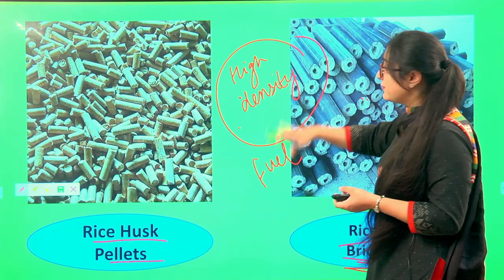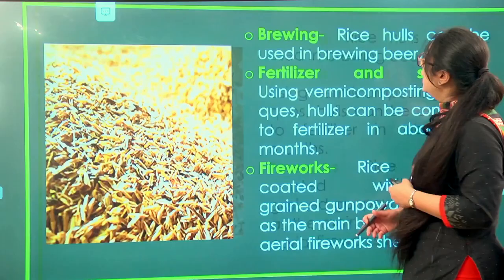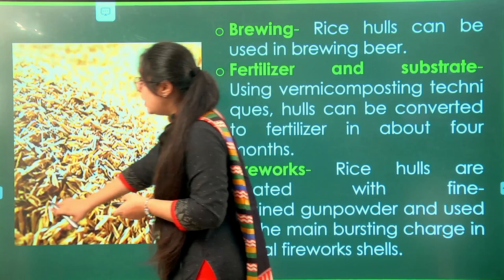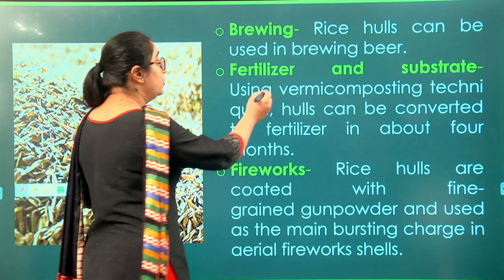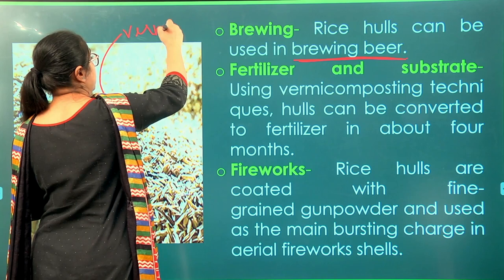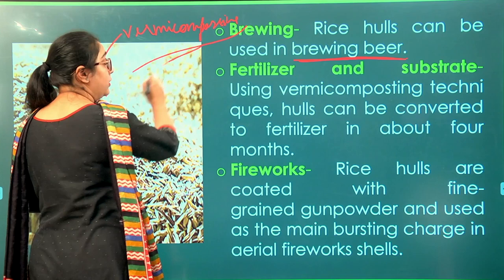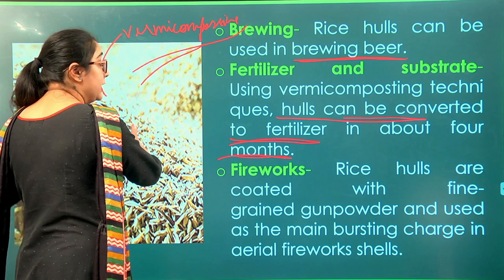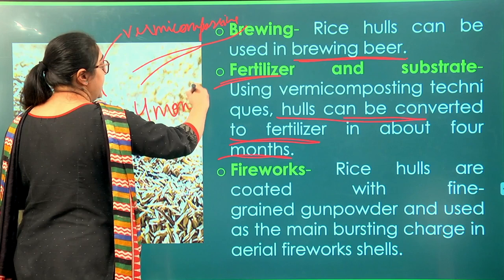Husk also finds uses in the brewing industry; rice hulls are used for brewing beer. It can also be used as a fertilizer and substrate. Using vermicomposting, hulls can be converted into very good fertilizers in about four months. After this process, it is ready to be used as a fertilizer and substrate, providing nutrition to plants.